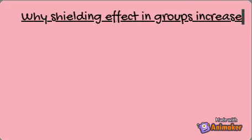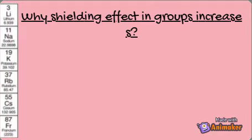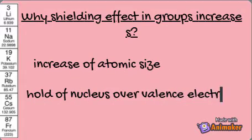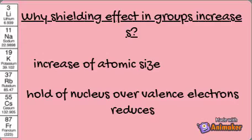Why does shielding effect increase in groups? It is because the atomic number increases from element to element, which results in the addition of new shells in group elements. This increase in atomic size causes a reduction in the hold of the nucleus over valence electrons, which increases the shielding effect. That is why the shielding effect of lithium is less than that of sodium.